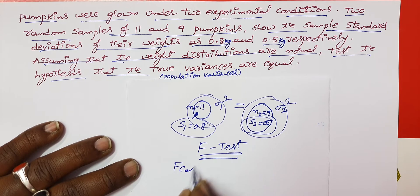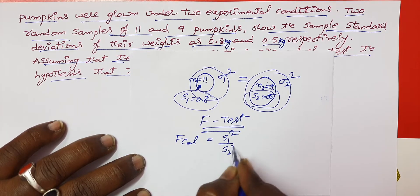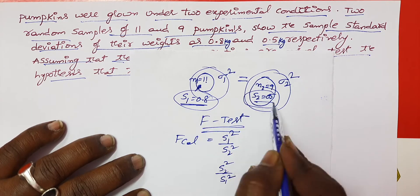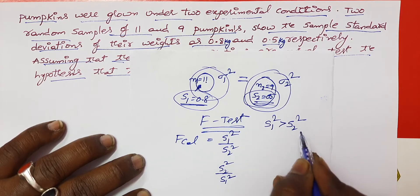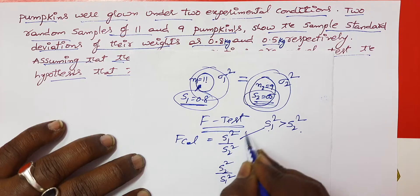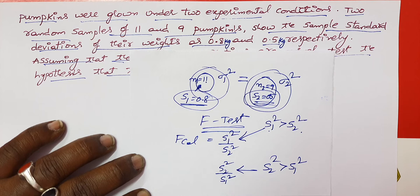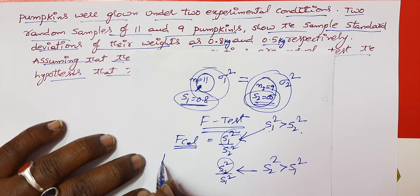Let's look at the F-test calculated value. The F calculated formula is S1 squared divided by S2 squared. We are testing the variance. In the procedure, the fourth step gives the calculated value, and the fifth step is to find the F table value.